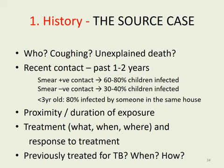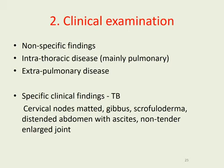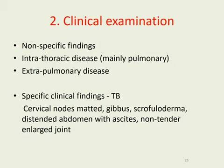Find out whether the source case is on treatment and responding. If no source case is identified, it is still your duty when you diagnose a child with TB to do reverse contact tracing to try and find the possible source case. If you examine a child with tuberculosis you might not find very much — just a low weight, a listless child who doesn't eat well. Most children have intrathoracic TB, so most signs may be pulmonary, but since children mostly have lymph node disease you will actually not find very much on examination. Extra-pulmonary disease may have more signs, but there are very few specific clinical findings.